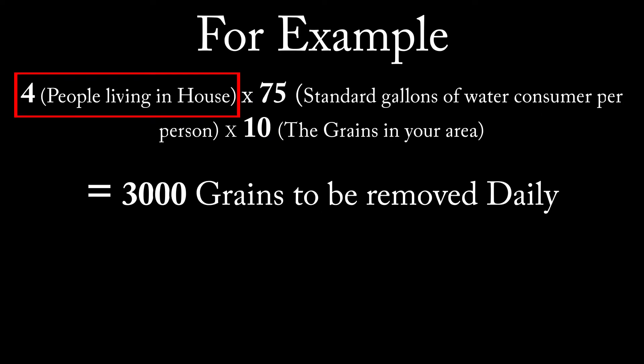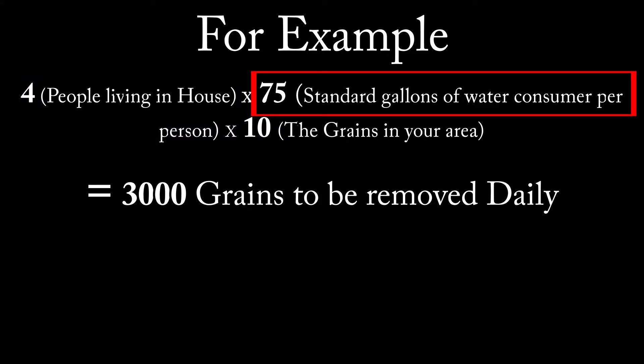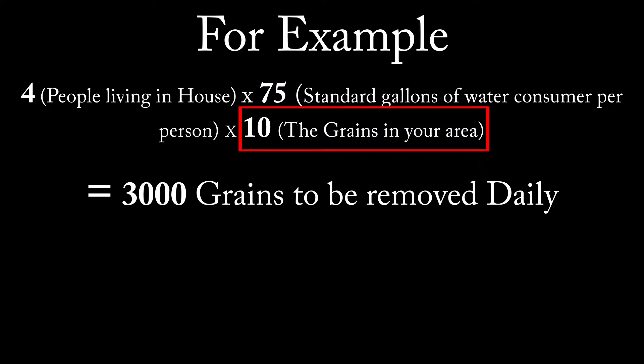Here's an example: four people living in my house times 75 gallons of water consumed per person, which is the average, times grains per gallon in my area, which is 10, equals 3,000 grains to be removed daily.